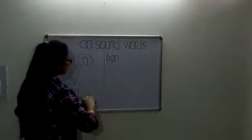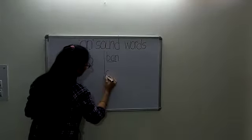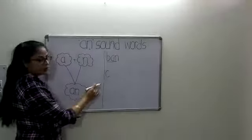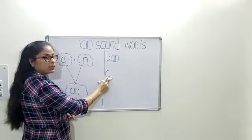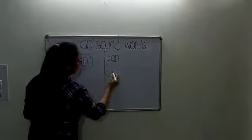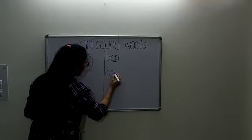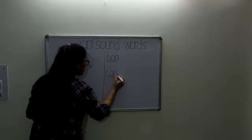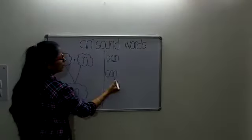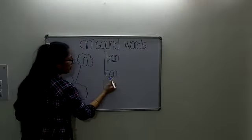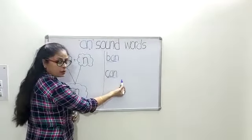The next letter is C. As we know, the phonetic sound of C is K, and when we add the sound of AN into the phonetic sound of C, it becomes K and AN — it becomes CAN.